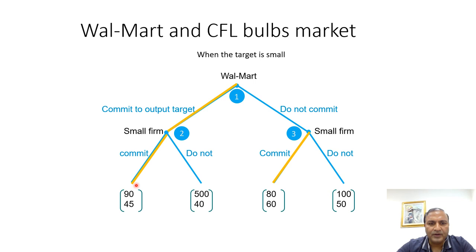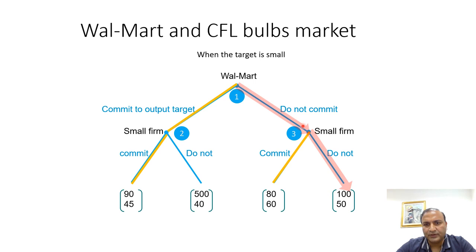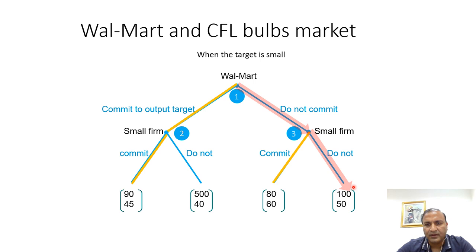Walmart commits to the output target not because of being socially responsible but because it gives them a higher payoff — committing yields 90 while not committing yields 80. However, this game resembles a prisoner's dilemma: if both firms cooperate and do not compete in producing energy saving bulbs, choosing do not commit / do not commit yields payoffs of 100 for Walmart and 50 for the small firm, which is higher than the subgame perfect Nash equilibrium outcome. If they play the game they get lower payoffs, but if they cooperate they can get higher payoffs.